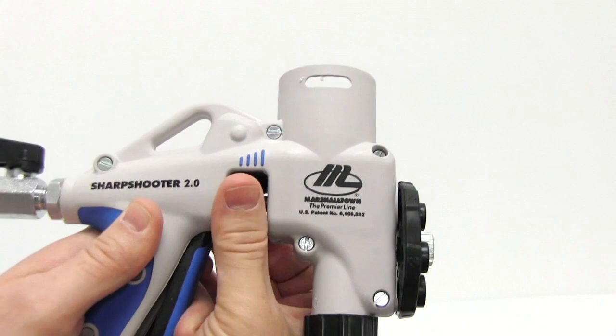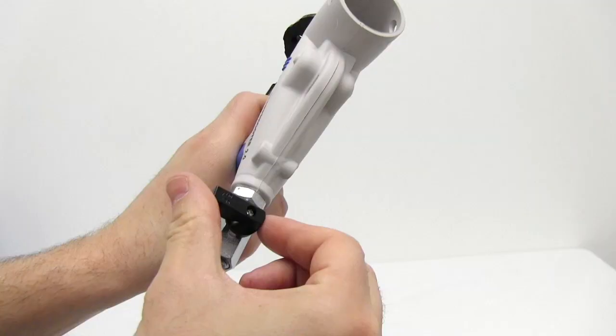The trigger is fitted with a material control knob that allows the user to dial in the desired amount of material while still maintaining a full pull on the trigger. This makes for more consistent texturing.